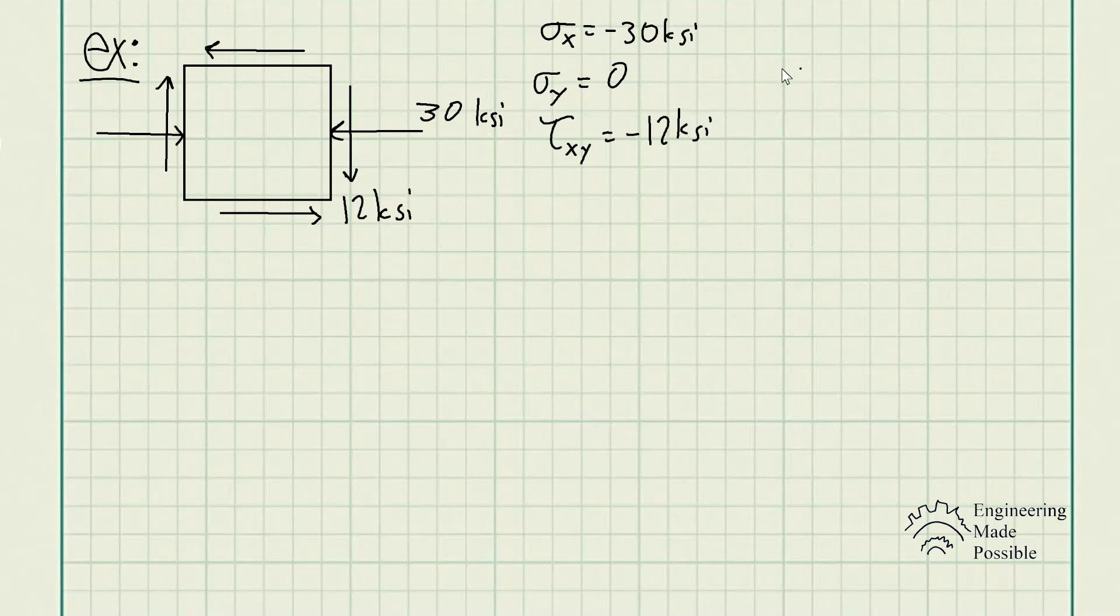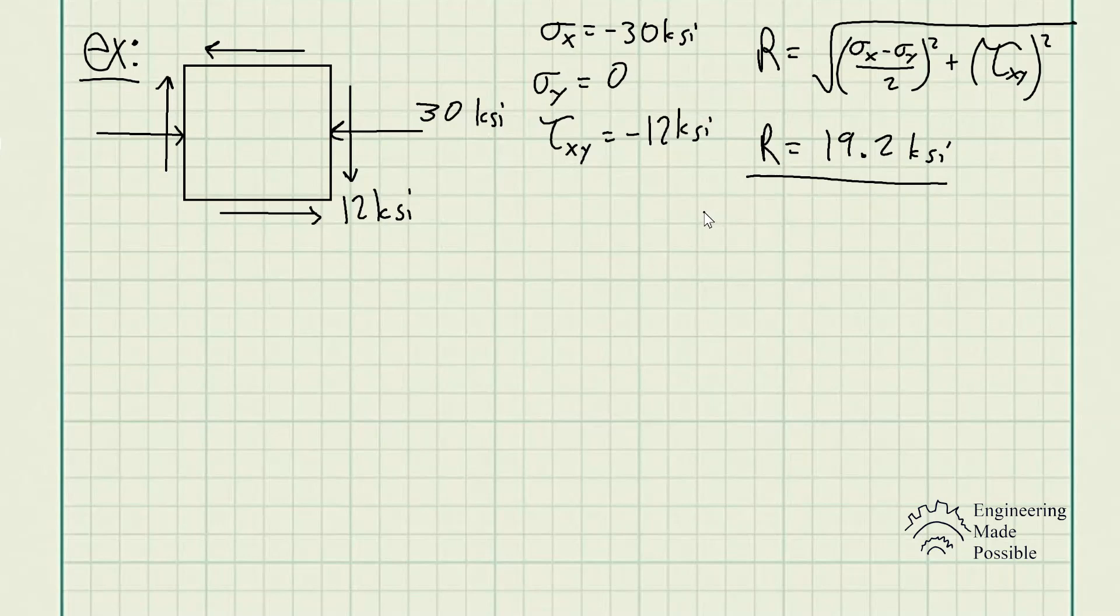This is where we first go ahead and solve for the radius of Mohr's circle. So this is the equation for the radius of Mohr's circle. Let's solve accordingly. R is 19.2 KSI. And then solve for the average normal stress. We get negative 15 KSI.